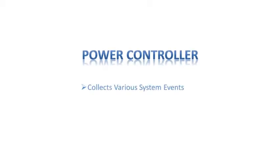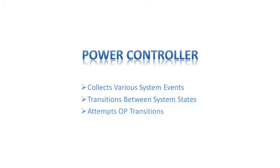Now we can talk about the power controller, which brings it all together. It collects various system events, including user activity and inactivity timeouts, and based on that information transitions between system states. When transitioning between system states, the power controller also attempts operating point transitions. An operating point transition may fail — for example, when there are outstanding minimum operating point requests, or when a driver vetoes the operating point change due to its requirements at that time.